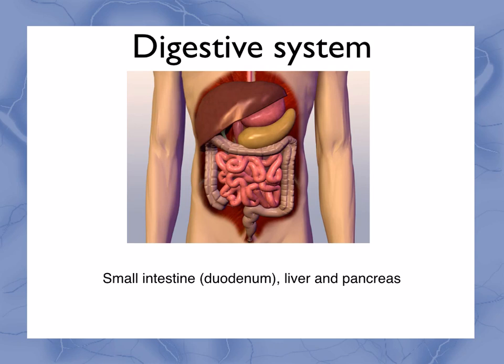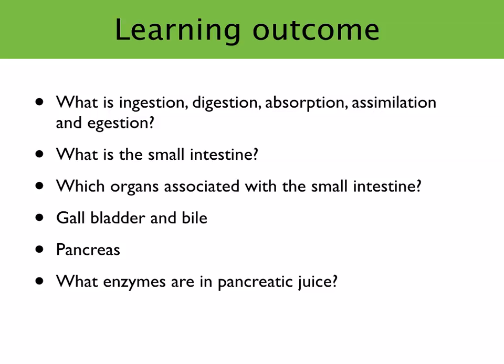In this topic, we're going to have a look at the duodenum, liver and pancreas. By the end of this topic, you should be able to answer the questions: what is ingestion, digestion, absorption, assimilation and egestion? What is the small intestine and which organs are associated with it? We're going to have a look at the gallbladder, bile and the liver, the pancreas and what enzymes are in the pancreatic juice.